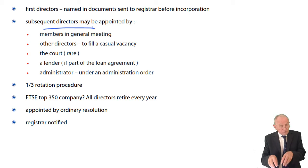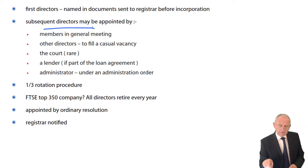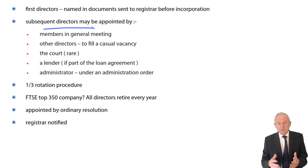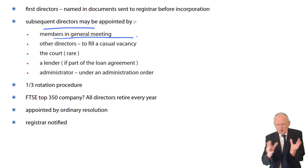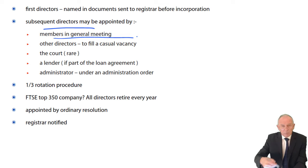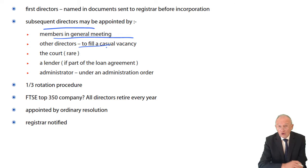The person appointed to fill a casual vacancy will typically, according to the articles, have to resign at the next annual general meeting and submit themselves for re-election if they choose to. So members are the primary appointers — that covers around 95% of situations. It may also be by other directors to fill a casual vacancy between general meetings. The court also has the power to appoint people as directors.